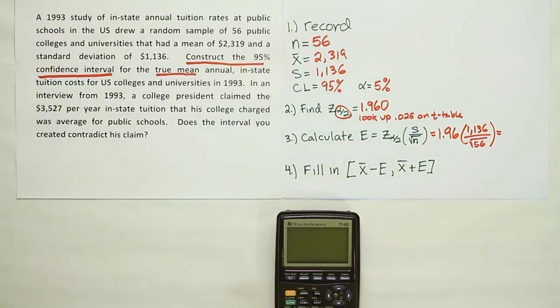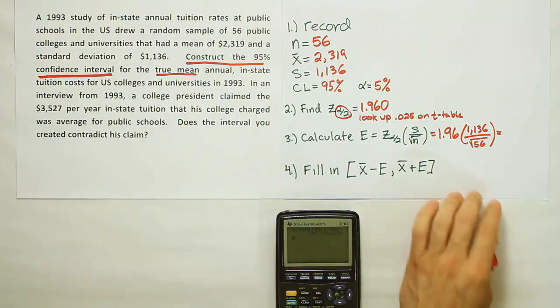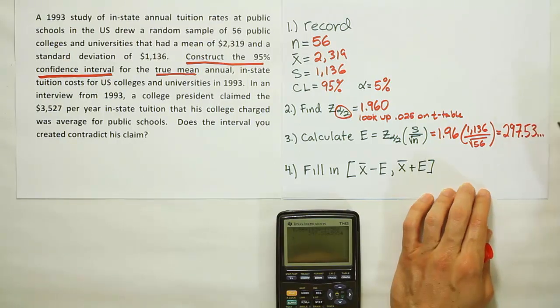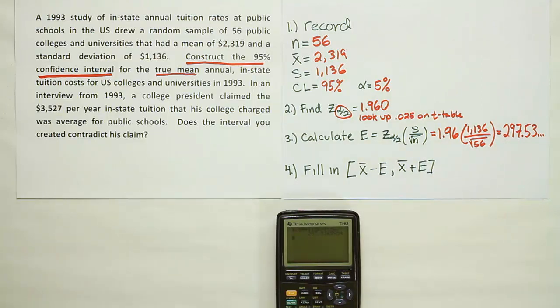Let me go ahead and do that now. We'll have 1.96 times 1,136 divided by the square root of 56. You don't need any special parentheses here or anything. This is straightforward for the calculator. It won't mess up the order of operations on you. The calculation here will give you 297.53 dot dot dot. It's going to go on and on. What I'm going to do is I'm going to store that in my calculator so I have it. If you don't have a store feature in your calculator, you can just keep more decimal places so that you don't round until the final step.